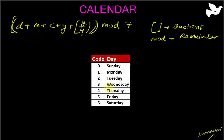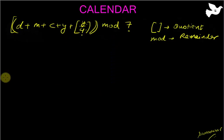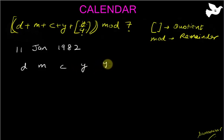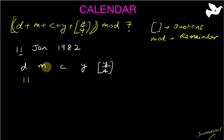Now let me take an example. Let us say you have to find out the day for the date 11 January 1982. So let me write the columns: d, m, c, and y, and y by 4. D here means the date — date is 11, so let me put 11. Month has a code — for January the code is zero.